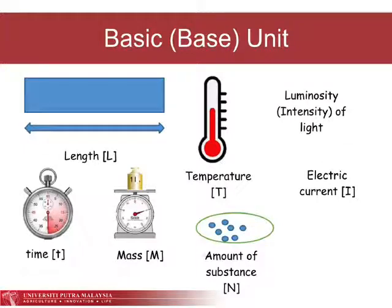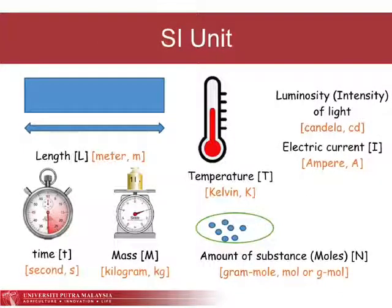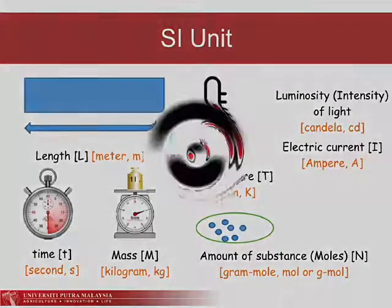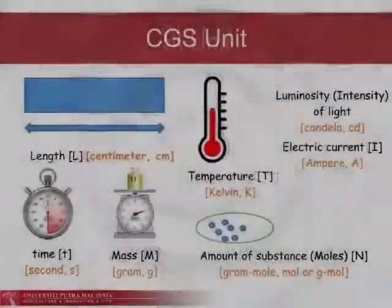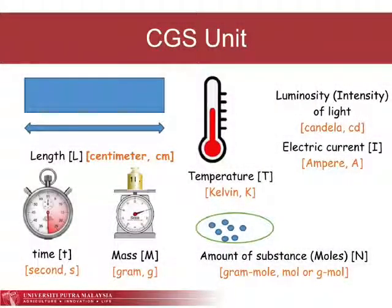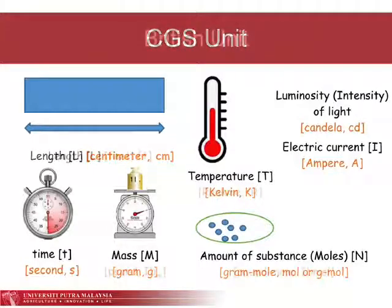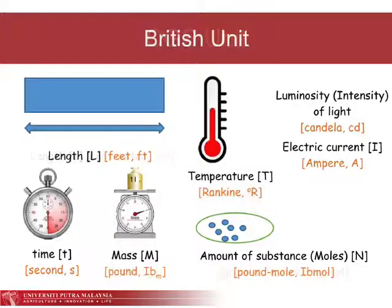Now, check what are the different units used for the different systems of units that we have in the world. For all seven dimensions, can you identify what are the different units used in SI, CGS, and the American Engineering System? Factors for converting from one system of units to another can be determined by taking ratios of quantities as listed in the conversion table.